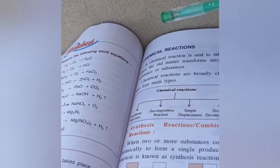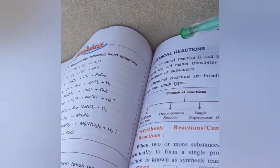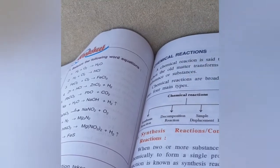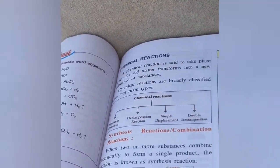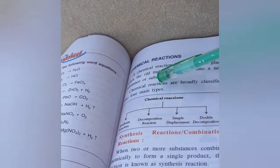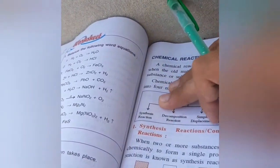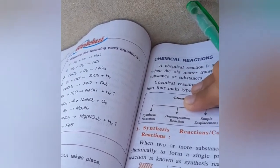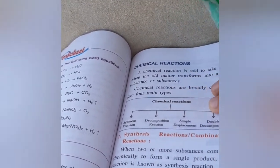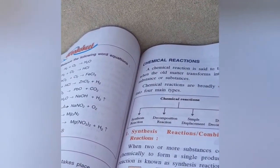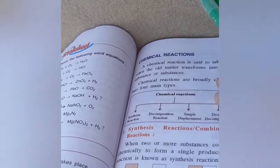Chemical reactions are broadly classified into four main types: synthesis reaction, decomposition reaction, simple displacement, and double displacement. These are the four types of chemical reactions.